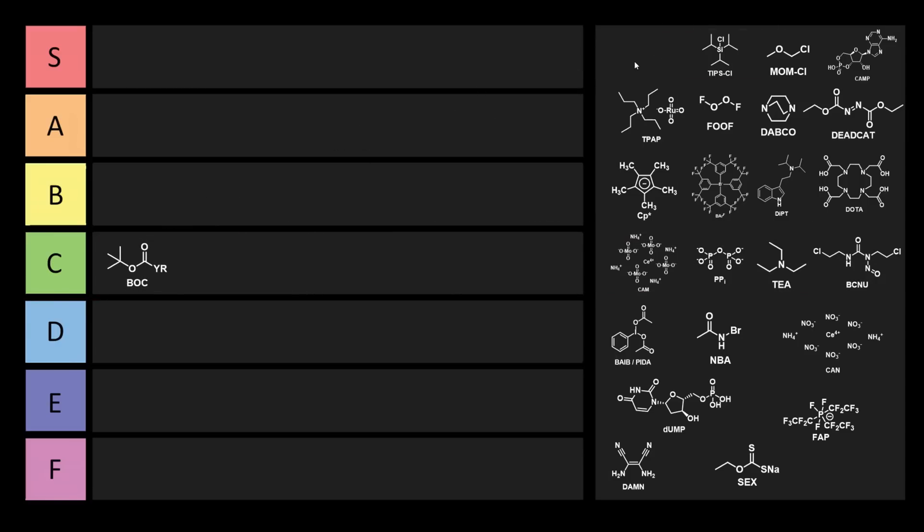For this tier list, the abbreviations that are the most cringe go into F tier, and the best abbreviations go into S tier. If it's based, it's S tier, and if it's cringe, it's F tier.